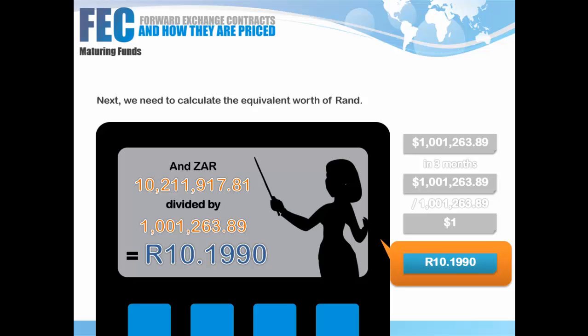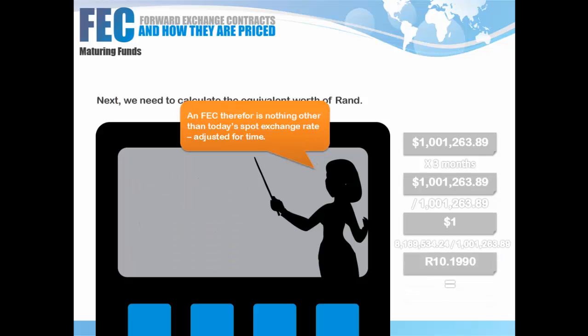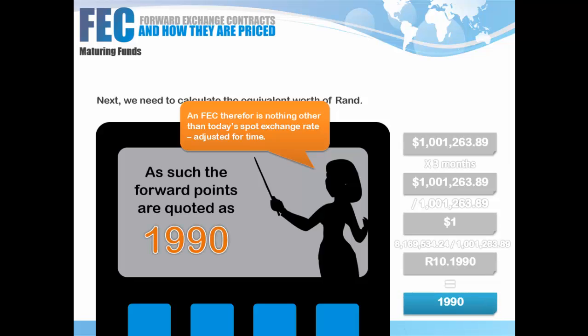What has happened here is we've worked out that the rand equivalent of a spot rate of 10 today is worth 10.1990 in the forward market. All we've done is worked out the time value of money — the cost of carry — taking the deposit from today, having it mature in three months, and taking the rand loan and having that mature in three months. A forward exchange contract is today's spot rate adjusted for time, and the forward points in this equation are 1990, calculated purely from the interest rate differential between the rand and the dollar.